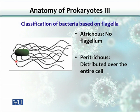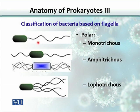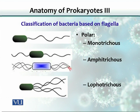If a bacterium possesses many flagella distributed all around the cell, we call it peritrichous — 'peri' meaning around. If the flagella are at the poles or ends, we call them polar. If there is one flagellum at one end, it is monotrichous. If flagella are present on both sides, it is amphitrichous — 'amphi' meaning both. If there is a tuft of flagella on one or both sides, they are called lophotrichous.